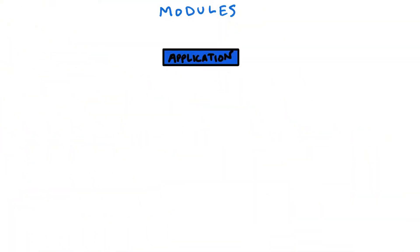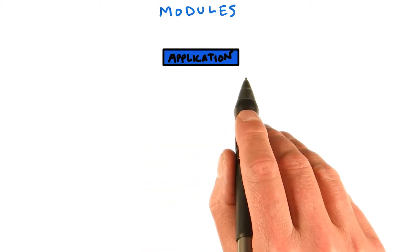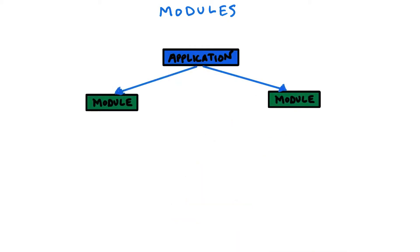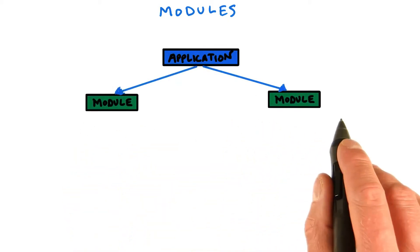When you create an App Engine application using modules, it will conceptually be structured like a tree. At the very top, we have the root, which is your application. And your application is made up of a number of modules, in this example, two.